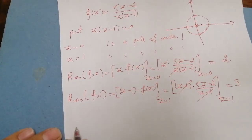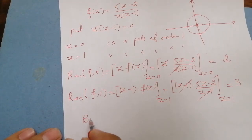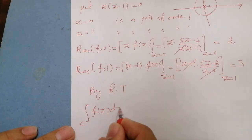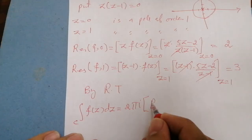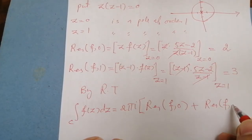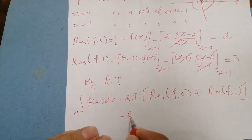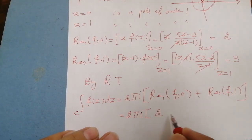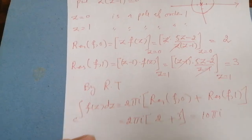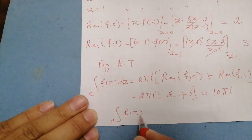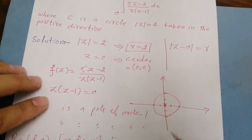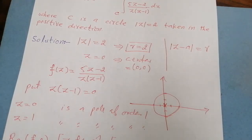Now we apply the Cauchy Residue Theorem. By the residue theorem, the integration of f(z) dz equals 2 pi iota times [residue of f at 0 plus residue of f at 1]. Putting in the values: 2 pi iota times (2 + 3) equals 2 pi iota times 5, which gives 10 pi iota. Both singular points z = 0 and z = 1 lie inside the circle of radius 2, so the integration of this function along the given curve is equal to 10 pi iota.